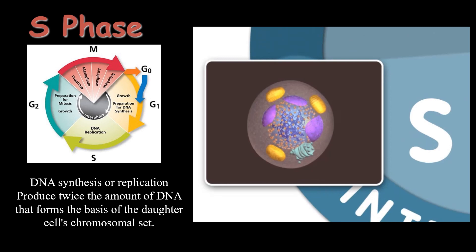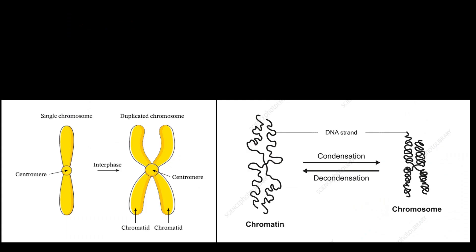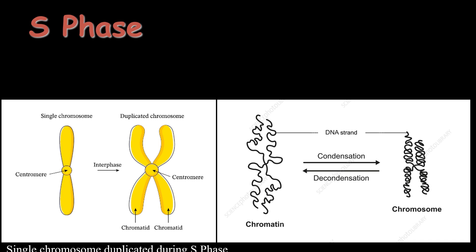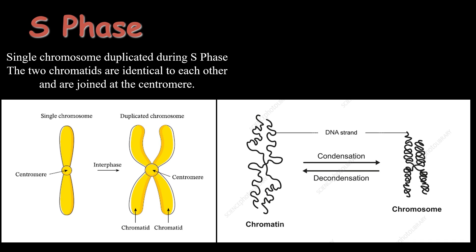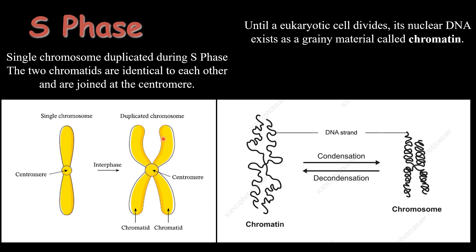In the S phase, the single chromosome or single chromatid gets duplicated to form identical sister chromatids — the duplication of the genetic material takes place, and the result contains two sister chromatids attached at the centromere. However, this condensed form of chromosome can only be seen during the mitosis division phase, during cell division or the M phase.